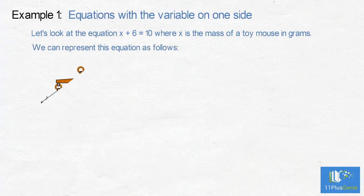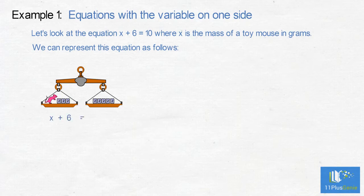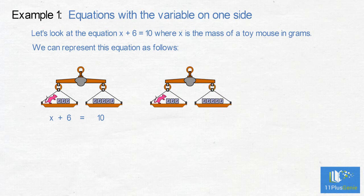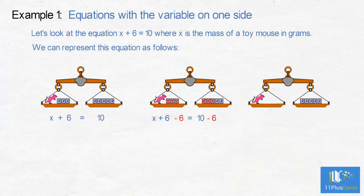A scale with a mouse and 6 grams on the left is balanced by the 10 grams on the right. To get the mouse on its own we need to take these three mass pieces on the left away, but to keep the scale in balance we must take away three mass pieces on the right hand side also. We now have x add 6 take away 6 which equals 10 take away 6. This simplifies to x equals 4. The mass of the toy mouse is 4 grams.